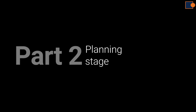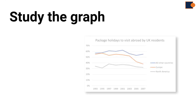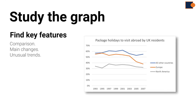Now let's focus on Part 2 planning. First you must study the graph. It involves finding key features like comparison, main change, and unusual trends. Let's break them down.